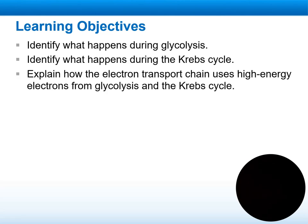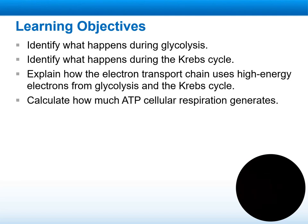What are our learning objectives for this lesson? We need to identify what happens during glycolysis and what happens during the Krebs cycle. These two main processes also happen inside plants as a reverse process to photosynthesis — together called cellular respiration. We also need to understand the electron transport chain and why it is used as a high-energy electron process. After that, we will calculate how much ATP we will have as an end result of cellular respiration.